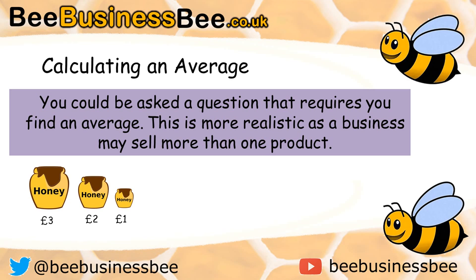You have got the large jar of honey sold at £3, the medium jar sold at £2, and the small jar sold at £1. See if you can calculate what the average selling price of the honey would be. Pause the video now while you do that and then I will cover the answer for you.